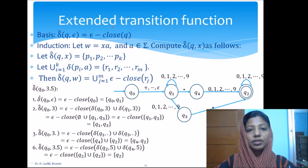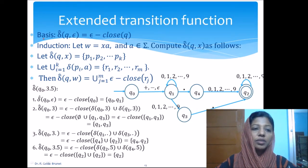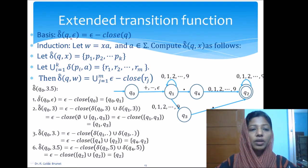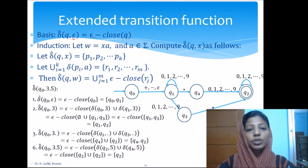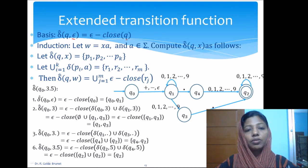The extended definition of the transition function goes like this. The basis is: from any state q upon the null string, we remain either in the same state or in any one of the states that we can reach using the epsilon closure. So delta-cap of q comma epsilon will be the epsilon closure of q.